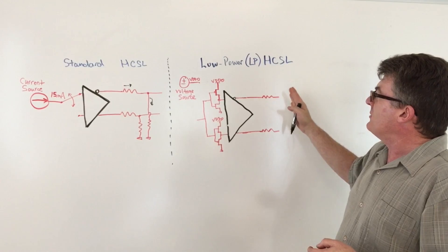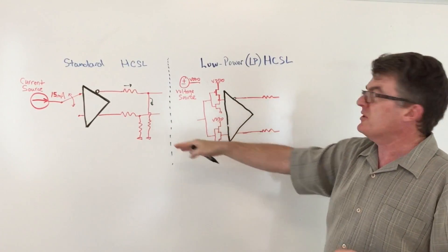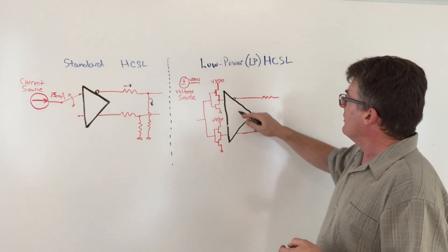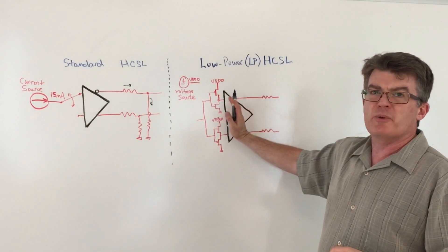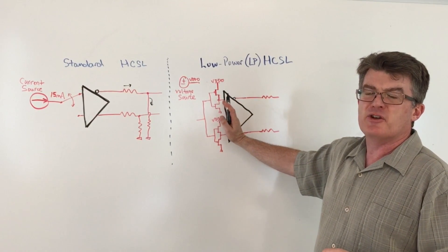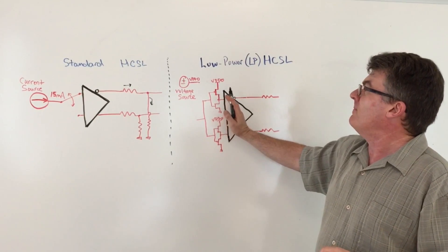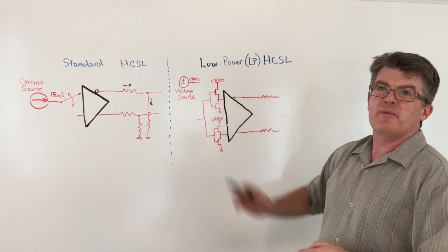So you save power, you have the ability to cut the termination resistors in half, and you can actually, with this technology, bring these series terminations inside for the most density on your board. That's low power HCSL in a nutshell. Thanks.